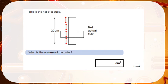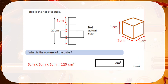I know that all together the squares are 20cm. I need to find the size of one square, so I would divide 20 by 4. I've found that the height of my square is 5. Because I know that my cube is made up of identical squares, I know that the height, the depth, and the length of my cube are all going to be 5cm. Therefore, to find the volume I would do 5 times 5 times 5, which gives me the answer of 125cm cubed.